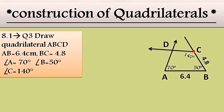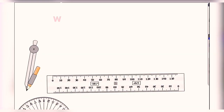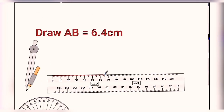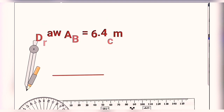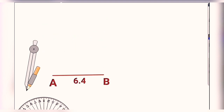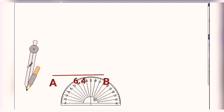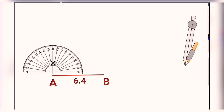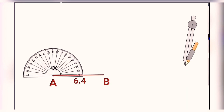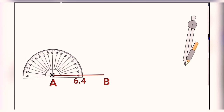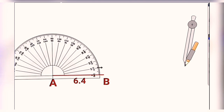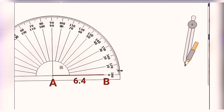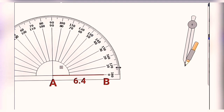Now let's move on to do it practically. As per our diagram, we draw segment AB first — that is 6.4 centimeters. After that, we draw angle A equals 70 degrees as given. Keep the protractor's center point on vertex A and overlap the reference line exactly on side AB. Once the overlapping is done perfectly, then proceed to count the angle.